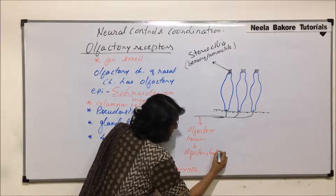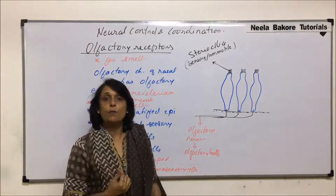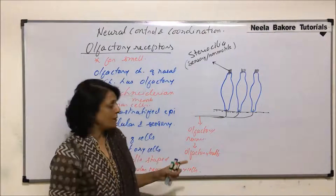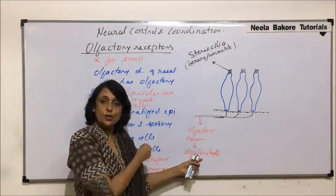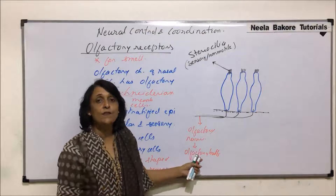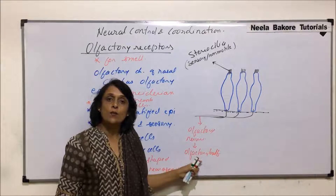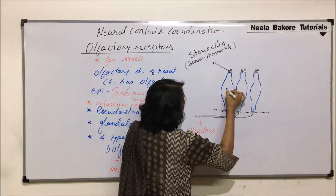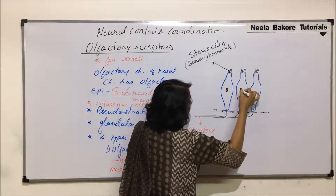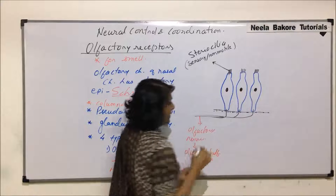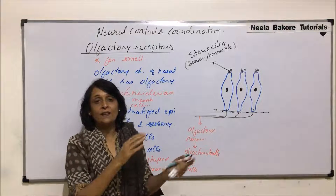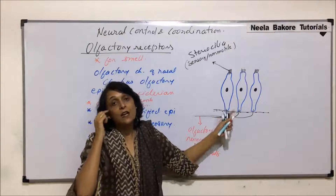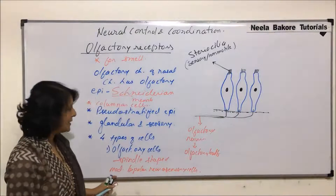The olfactory nerve is the first cranial nerve, which goes to the olfactory bulbs in the forebrain. In the forebrain there are olfactory lobes — the olfactory bulb and olfactory tract. This is a sensory nerve that perceives the stimulus and carries it up to the nucleus in the olfactory bulb. The nucleus of the olfactory cells is present in the middle solar part.